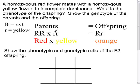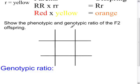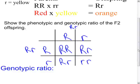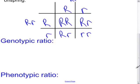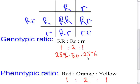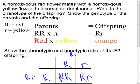Now show the phenotypic and genotypic ratio of the F2 offspring. Our F1 children are heterozygous (capital and lowercase r), separated into gametes. The genotypic ratio would be one homozygous dominant, two heterozygous, and one homozygous recessive. The phenotypic ratio is one red, two orange, and one yellow. You can also express these ratios as percentages: 25%, 50%, and 25%. This is the end of the review video for incomplete dominance.